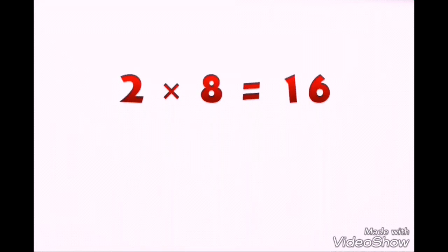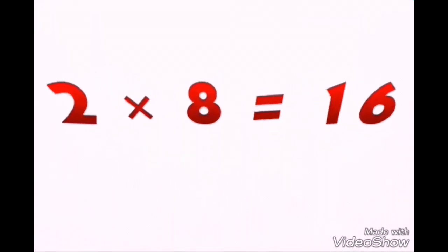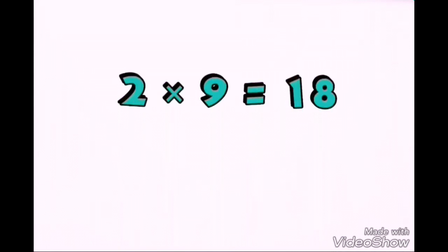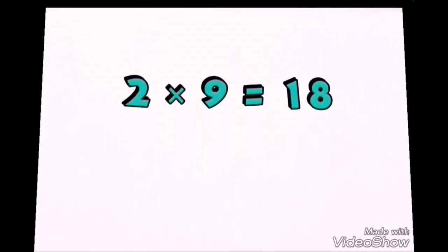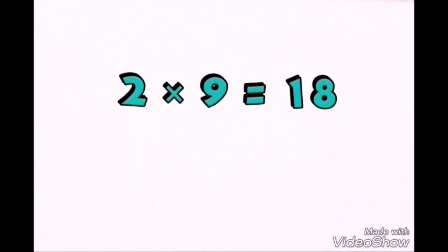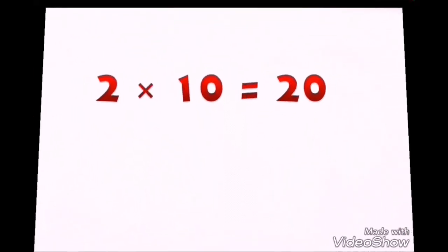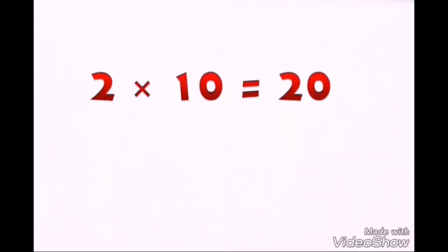Two sevens are fourteen. Two eights are sixteen. Two nines are eighteen. Two tens are twenty.